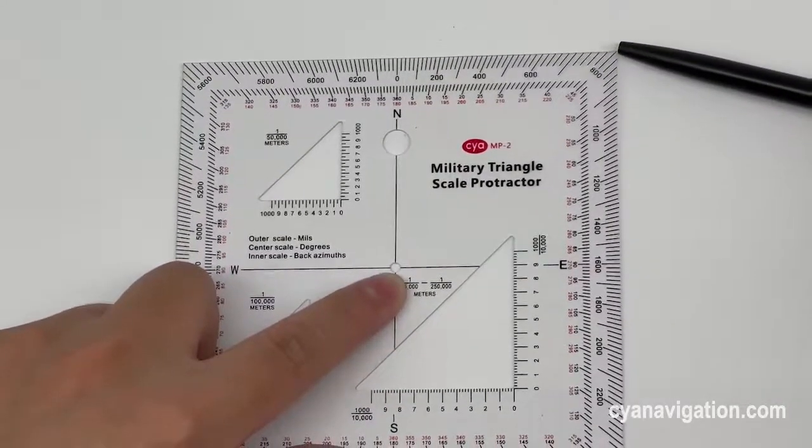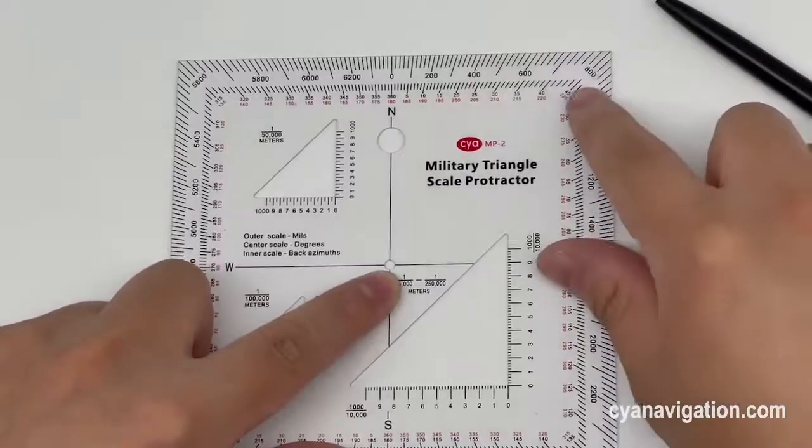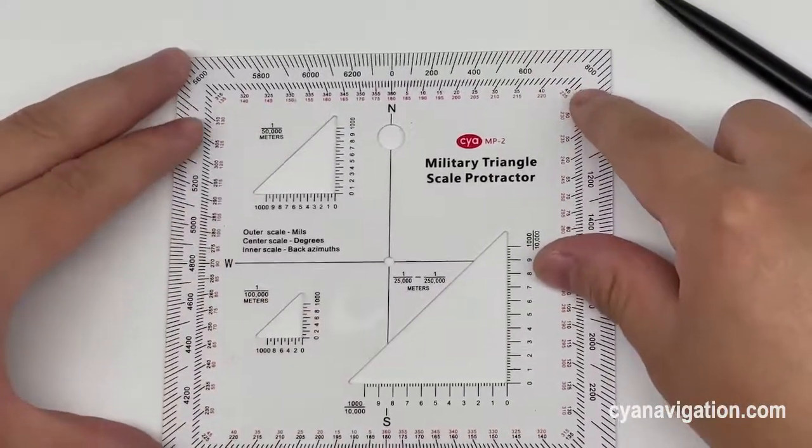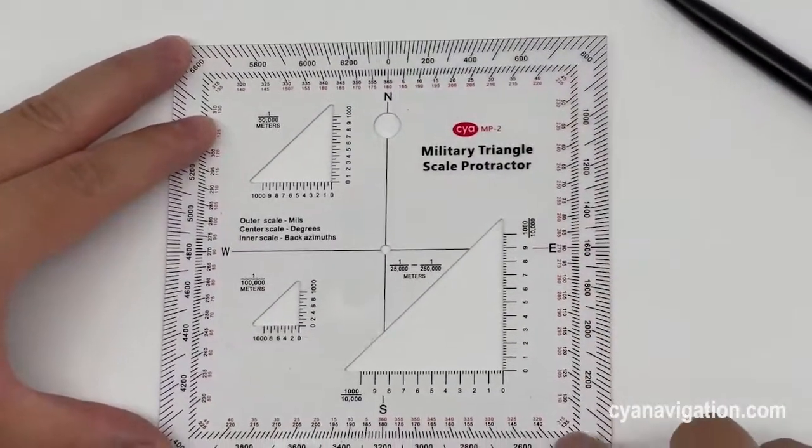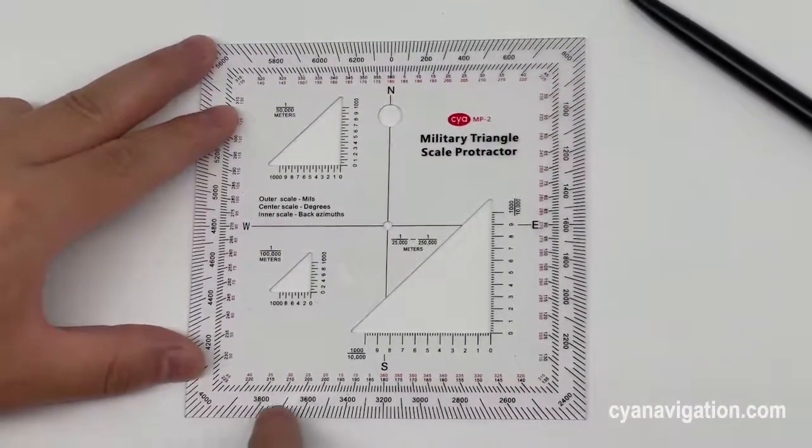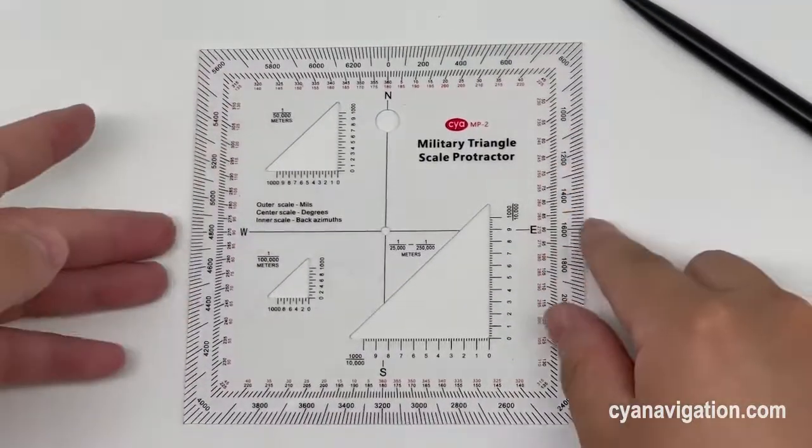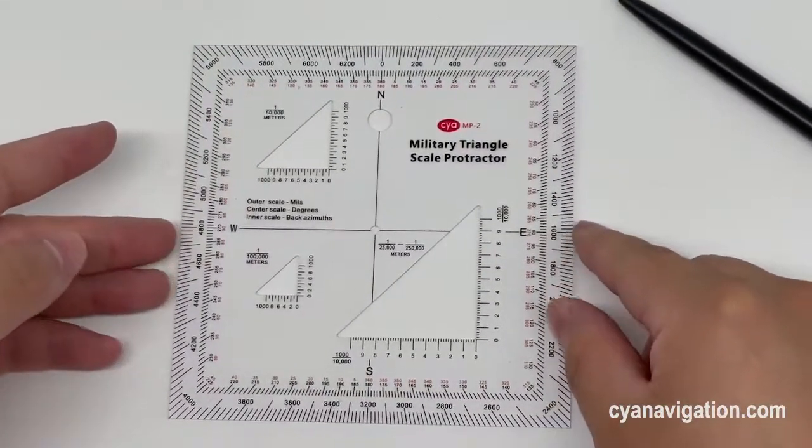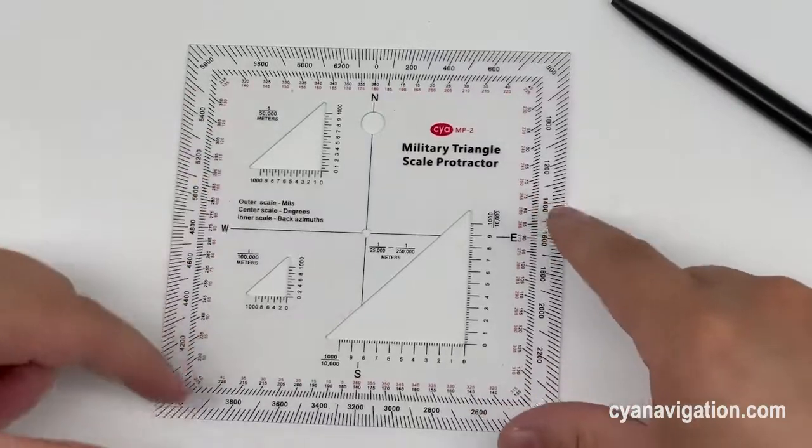It's very easy to use and convenient for measuring and reading all numbers and angles for mils, degrees, and back azimuth, and can be used for maps with different scales.